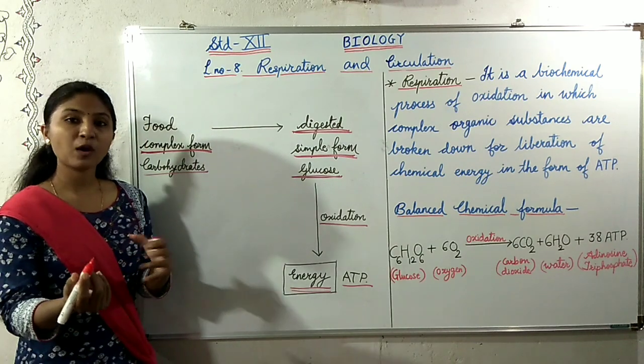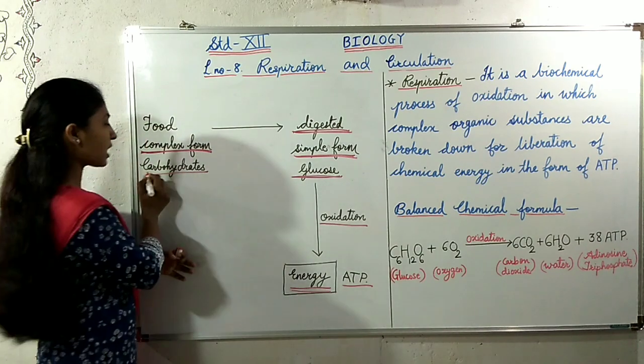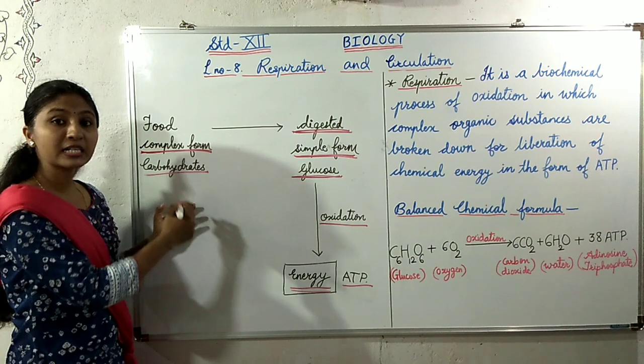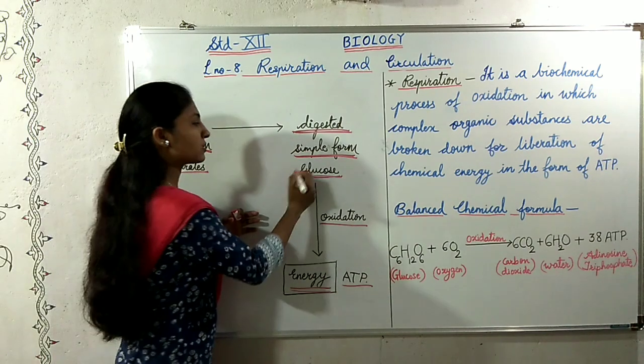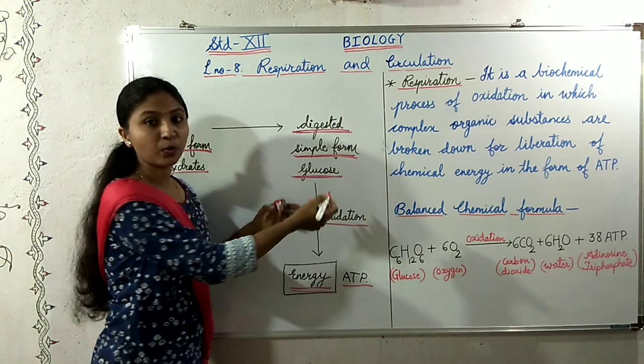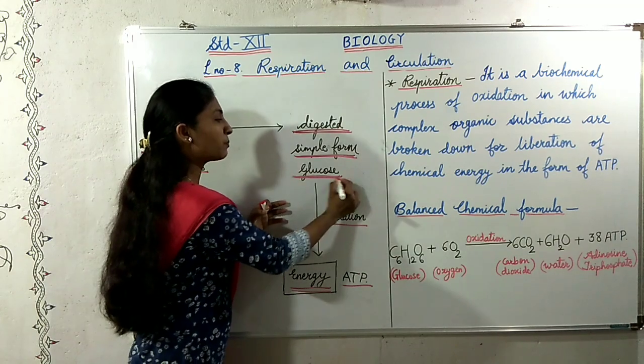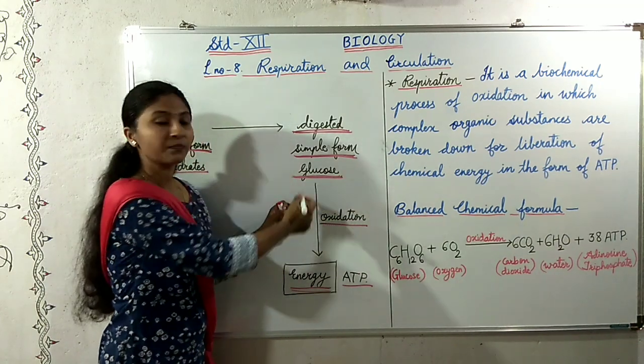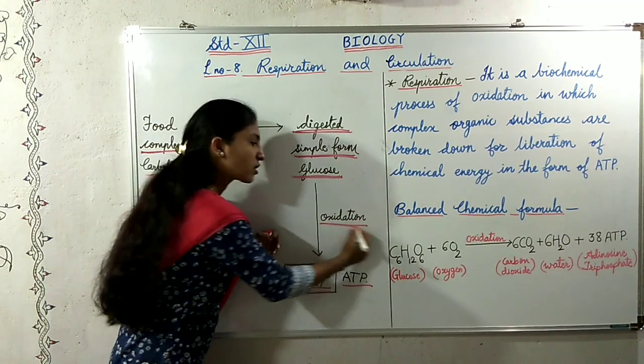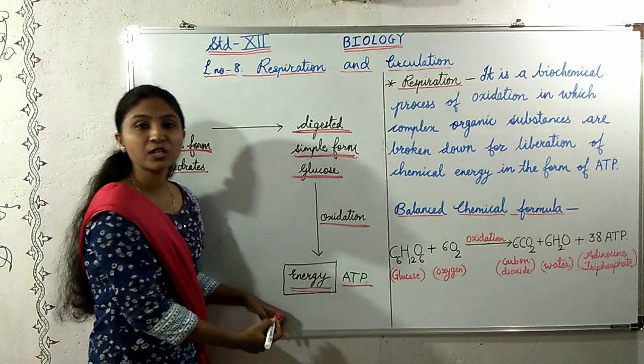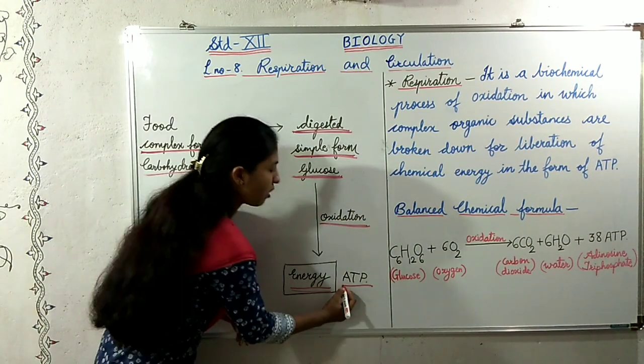The example of complex food that we have taken is carbohydrates. Carbohydrates after consumption are digested or broken down into their simple form, that is glucose. This glucose is oxidized and then energy is derived from it in the form of ATP.